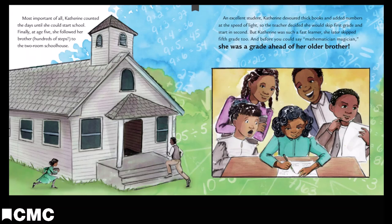An excellent student, Catherine devoured thick books and added numbers at the speed of light, so the teacher decided she would skip first grade and start in second. But Catherine was such a fast learner, she later skipped fifth grade too. And before you could say mathematician-magician, she was a grade ahead of her older brother.